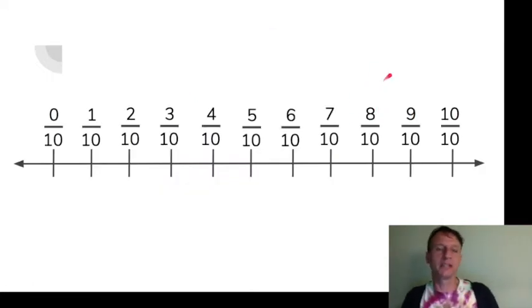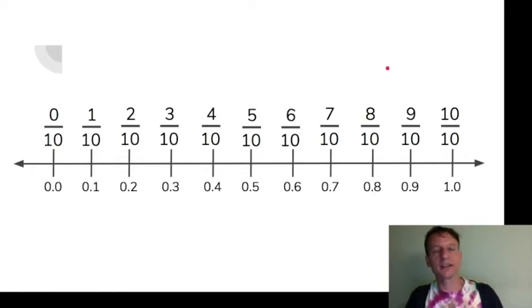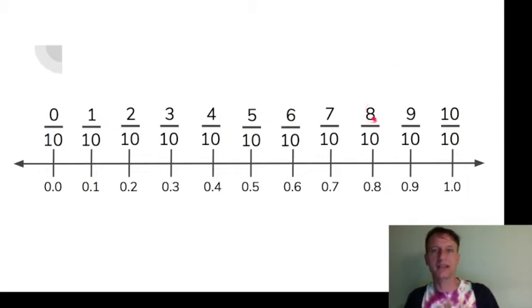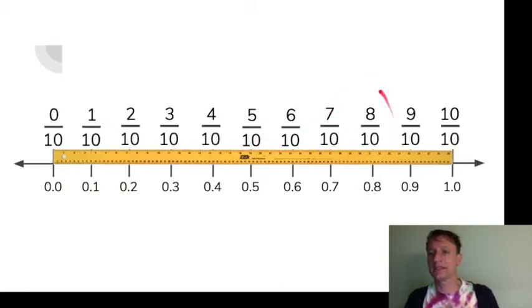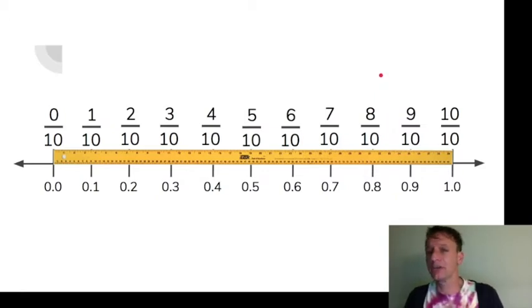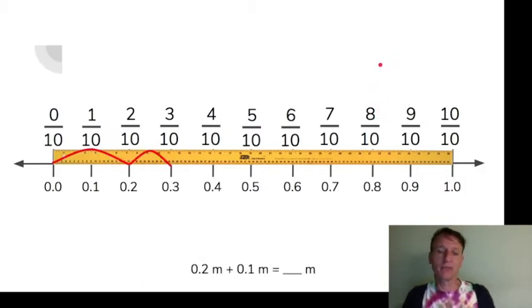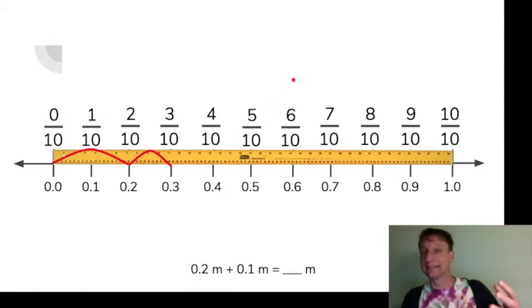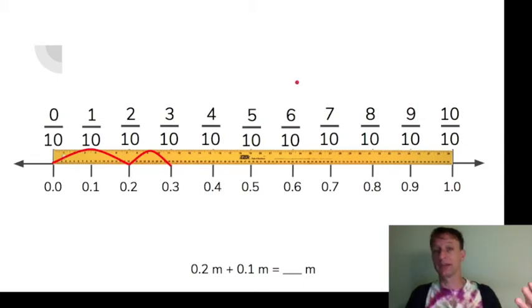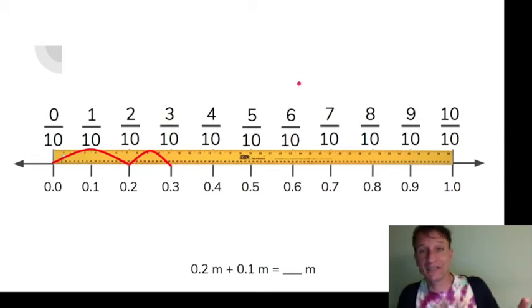Here we have zero tenths up to ten tenths in fraction form, and there they are in decimal form. Those are all equivalents — for example, eight tenths is eight tenths. Now here's a meter stick — it looks like a yard stick but remember we're doing metric, so it's a meter stick. We're going from kilograms, a measure of weight, to a length measurement using meters — and centimeters might make a cameo appearance.